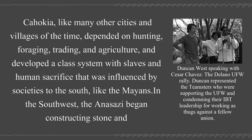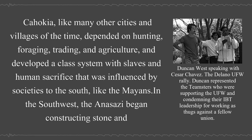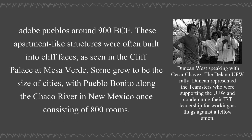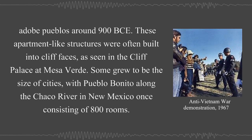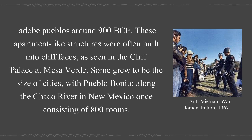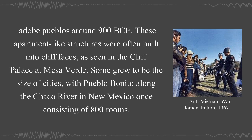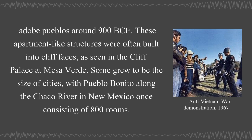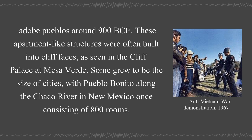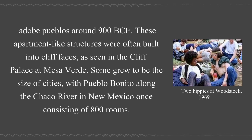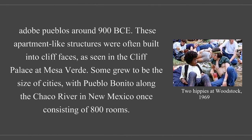In the southwest, the Anasazi began constructing stone and adobe pueblos around 900 BCE. These apartment-like structures were often built into cliff faces, as seen in the Cliff Palace at Mesa Verde. Some grew to be the size of cities, with Pueblo Bonito along the Chaco River in New Mexico once consisting of 800 rooms.